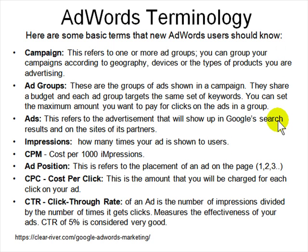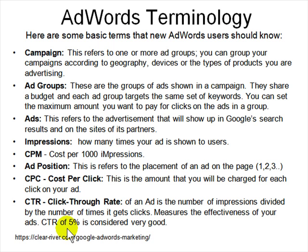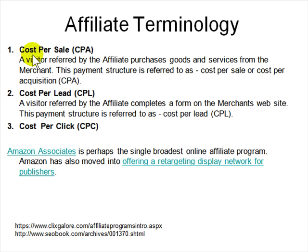Ad position refers to positions 1, 2, 3 on the results page. CPC stands for Cost Per Click — the amount an advertiser is charged if someone clicks the ad. CTR is Click Through Rate — the quality of an ad measured by the number of times it gets clicked divided by the total number of times it was shown, expressed as a percentage. A 5% CTR is very high and good; typically 1 out of 100 clicks is considered a good number. There are also branding ads where people are not expected to click, but they keep seeing the ad repeatedly — like Coca-Cola ads on Facebook.